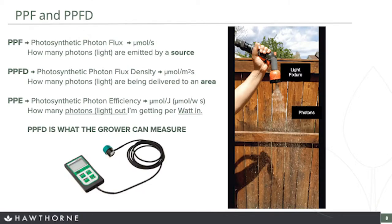So if humans use lumens and foot candles, what do we use in horticultural lighting? This is where PPF and PPFD come into play. PPF — photosynthetic photon flux — defines the flux or movement of photons over time, with units of micromoles per second. It tells us how many photons are being emitted per second and is usually a fixture specification. PPFD — photosynthetic photon flux density — is what we actually measure at the canopy surface, with units of micromoles per meter squared per second. It defines how many photons are striking a specific area over a period of time — essentially the light intensity on a surface.